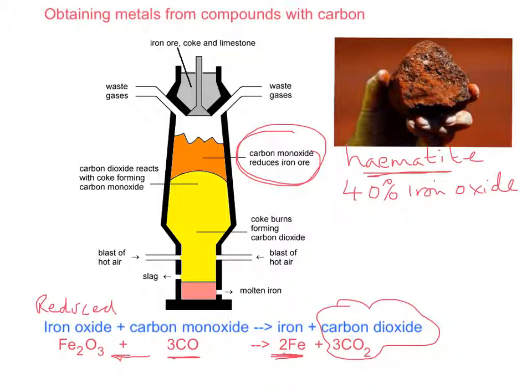The temperature inside the furnace should be around 1600 degrees C and that allows the molten iron to trickle to the bottom and collect.